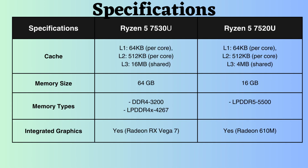The L1 and L2 cache sizes for both of these processors are identical, but the L3 cache of the Ryzen 5 7530U is 12MB more than that of the Ryzen 5 7520U. A larger cache is generally associated with improved system performance as it allows the processor to quickly store and retrieve more data and instructions, thereby reducing the need to fetch data from the slower main memory.